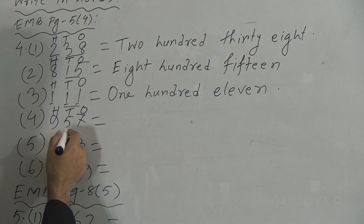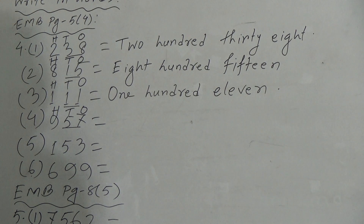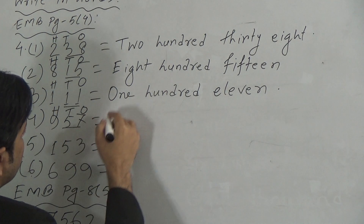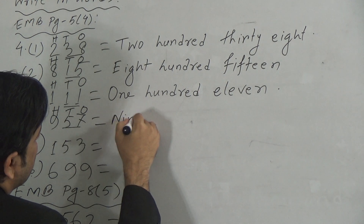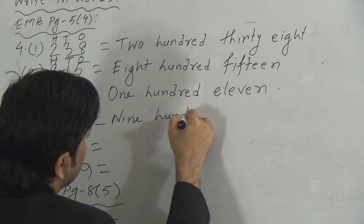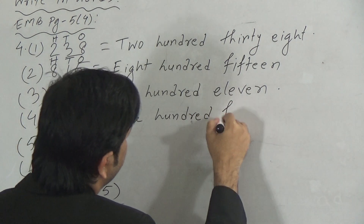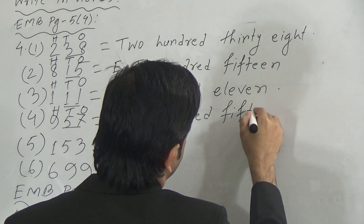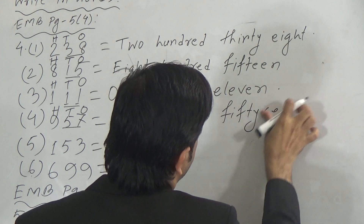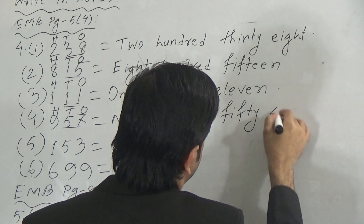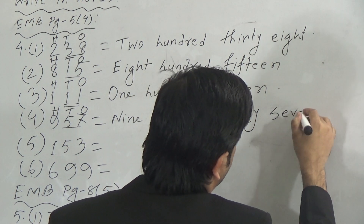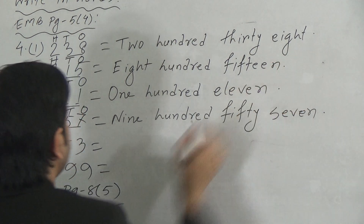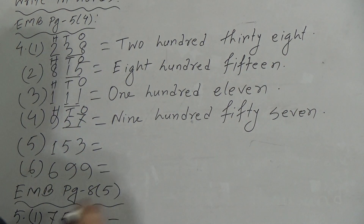So, this is 957. We can write here: 957.